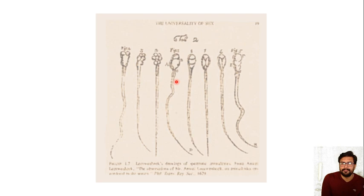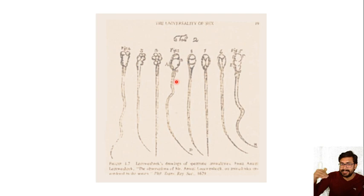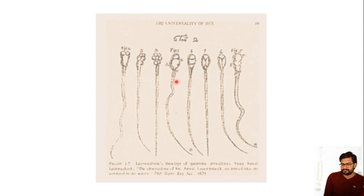So Robert Hooke saw cork cells — non-living, dead plant cells. The first person to see a living cell and an animal cell was Anton van Leeuwenhoek. This is an example of his drawings of a spermatozoa that he saw under a microscope he himself designed.